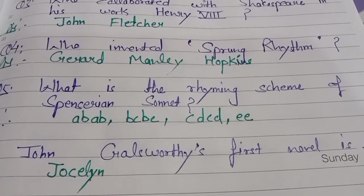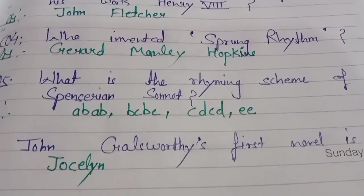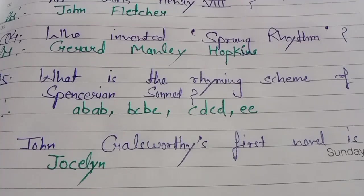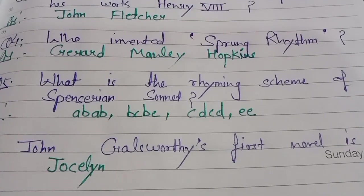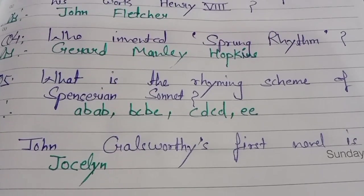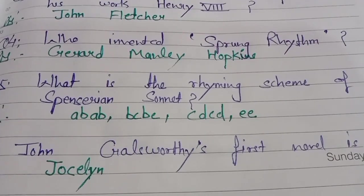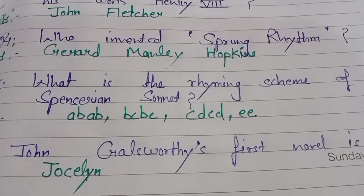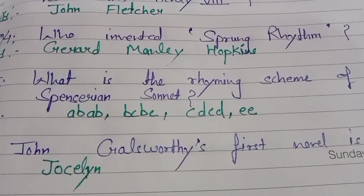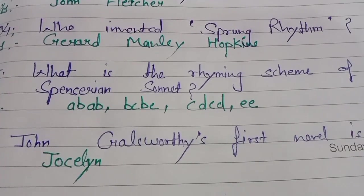Question 5: What is the rhyming scheme of the Spenserian sonnet? This question is about the Spenserian sonnet's rhyming scheme versus the Shakespearean sonnet's rhyming scheme. Friends, the Shakespearean sonnet's rhyming scheme ends in GG. We know a sonnet is a poem of 14 lines. We need to set our mind clearly with the rhyme scheme.